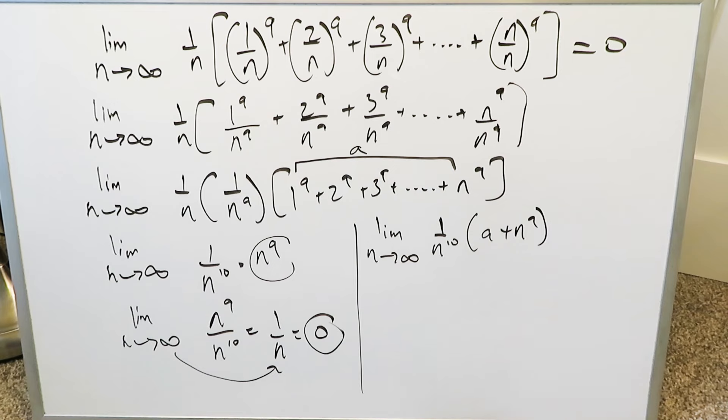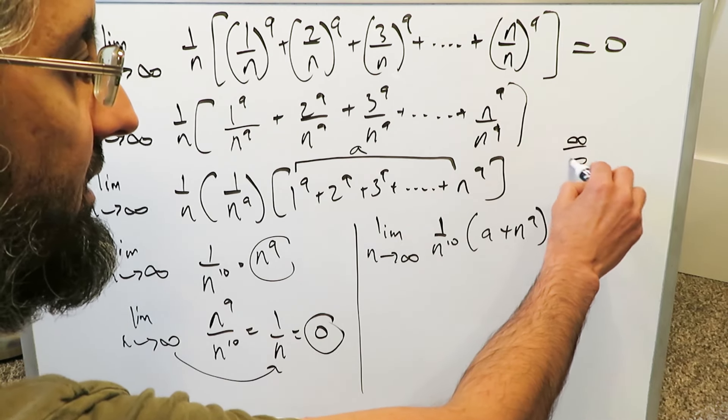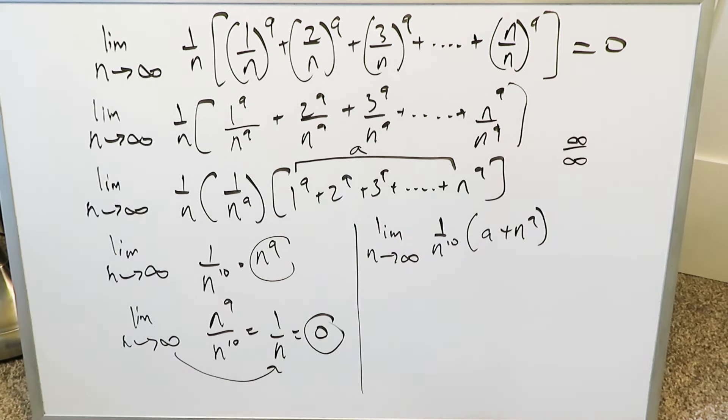When you're doing just an arbitrary plugging in of that infinity in places of n, you're really looking at something which is an infinity over infinity, an indeterminate limit form. You have that so you could do essentially a derivative of the numerator, derivative of the denominator.